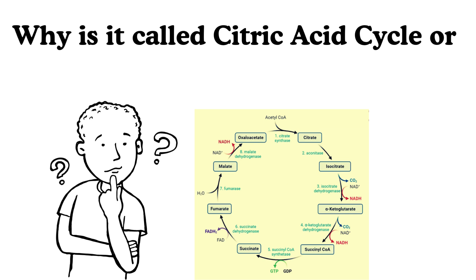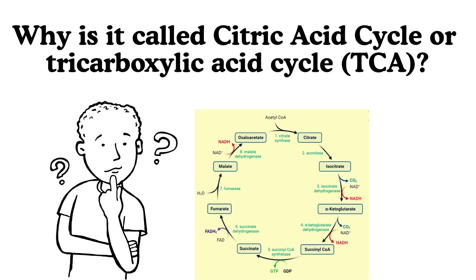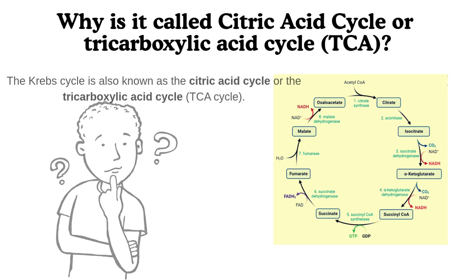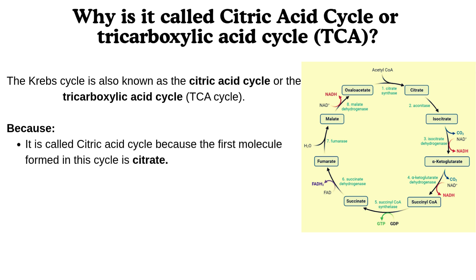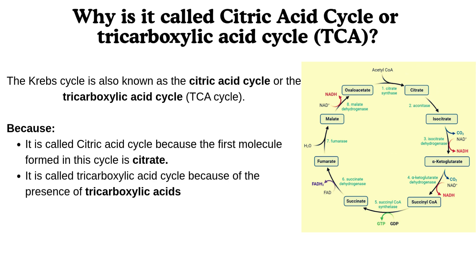Why is the Krebs Cycle called the citric acid cycle, or tricarboxylic acid cycle (TCA)? It is called the citric acid cycle because the first molecule formed in this cycle is citrate. It is called the tricarboxylic acid cycle because of the presence of tricarboxylic acids in the pathway.